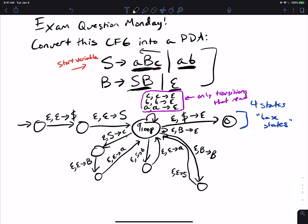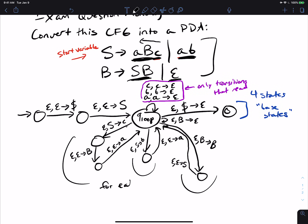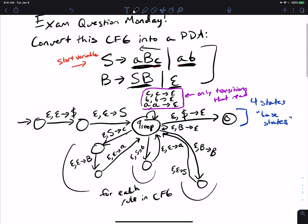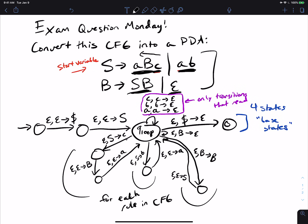The key takeaway: the four base states are always the same. You always push a special bottom-of-stack marker, then the start variable, go to q-loop, and have epsilon, special-symbol goes to epsilon leading to a final state. Q-loop always has self-loops on every terminal. And for each rule in the CFG, you make a series of transitions that go out from q-loop and come back, popping the left-hand variable and pushing the right-hand side in reverse. That is how to convert any CFG into a PDA.